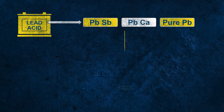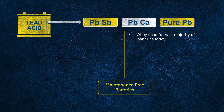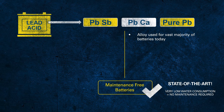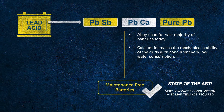Today, for all so-called maintenance-free batteries, lead calcium alloy is used for both the positive and negative grid. These batteries have very low water consumption; therefore, under usual circumstances, there is no more maintenance required, which is a huge benefit for the end customer. The calcium is used to strengthen the grid and increase the mechanical stability, as pure lead is very soft, which could affect the mechanical robustness while in use — an important factor for the long life of the battery.